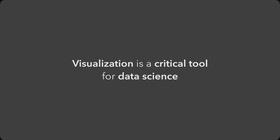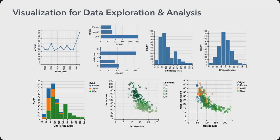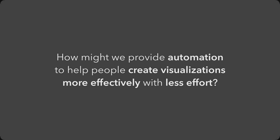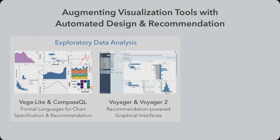It's probably indisputable that visualization is critical for data science. We have seen analysts use plots as one of the first ways to look at their data, from looking at distribution to exploring potential relationships. Even when we create machine learning models, it's important to check that input data doesn't have quality issues like biases. Developers also use visualization-like diagrams to understand complex structures like deep learning model architectures. My research explores how to provide automation to help people create visualizations more effectively and with less effort.